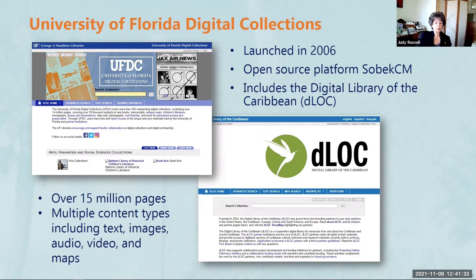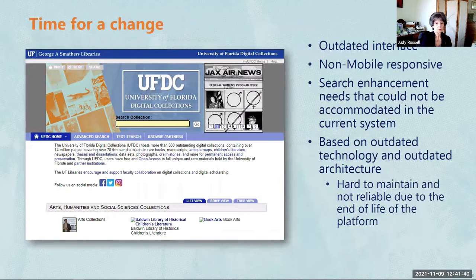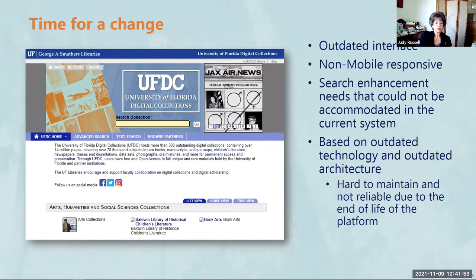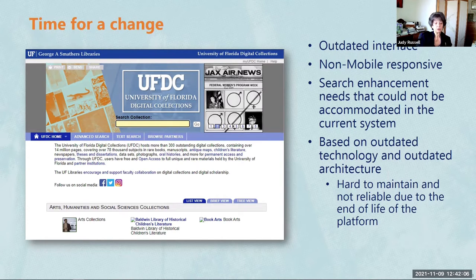With our plans to load over a million pages per year, the combined production and patron systems were overloaded. It was time to make some major improvements. The interface was outdated and not mobile responsive, and there was a backlog of enhancement requests that had accumulated. Migrating to a different open source or commercial platform was examined, but given the variety of content and media types as well as production integration demands, there was no clear solution. So we decided it was time to rebuild our digital library system.